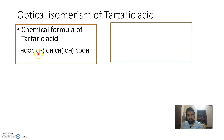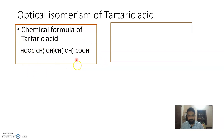The second carbon is a chiral carbon — it has C, OH, H, and CHOH attached. The third carbon is also a chiral carbon. The terminal COOH carbon is not chiral because it does not have four different groups attached. So we have two chiral carbons in tartaric acid.